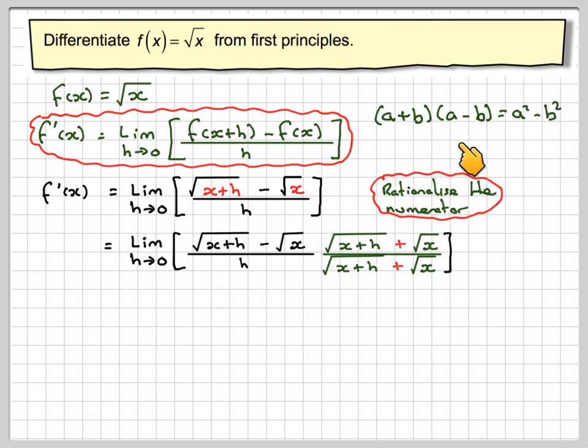Now, a plus b times a minus b is a squared minus b squared. We've got that situation here, perhaps the other way around, but we've got this situation. So if we square x plus h, we get the square root of x plus h, we just get x plus h. And if we square the square root of x, we just get x.